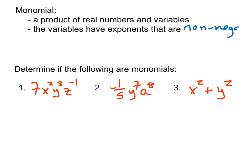Non-negative integers. So we can't have exponents on the variables that are negative numbers, and we can't have the exponents on the variables be fractions or any other numbers. They have to be non-negative integers.